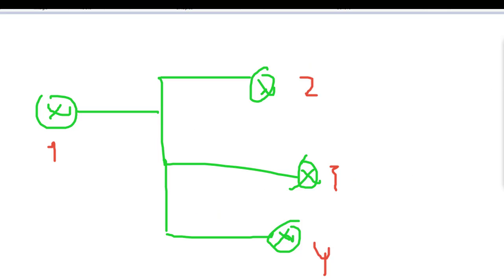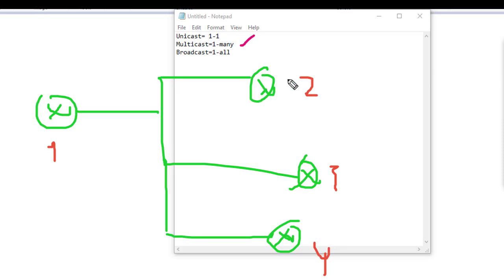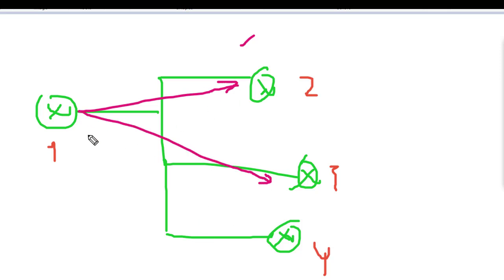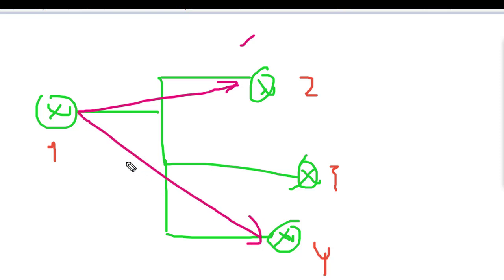Next is multicast. Multicast is one to many. What does one to many mean? Router one goes to router two and also router three, but not router four — not all, but some. Or it can be router one goes to router two and router four but not router three. So multicast means if you have a hundred devices in a network, maybe you reach 50 or 60 devices, but not all.